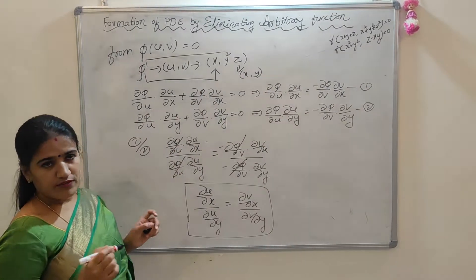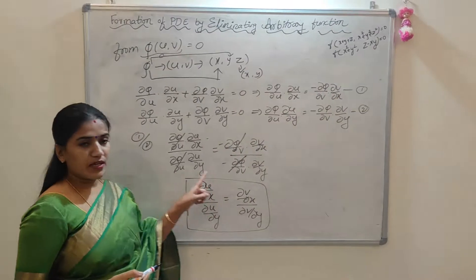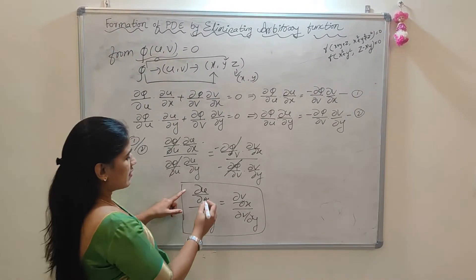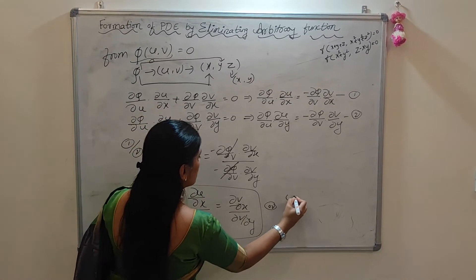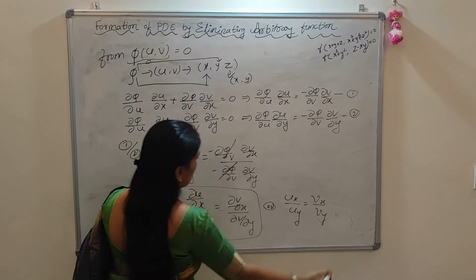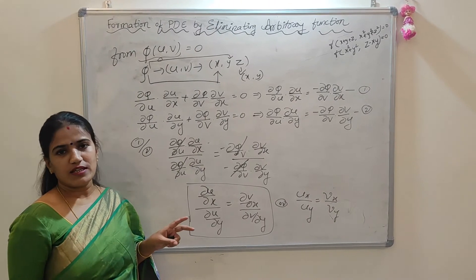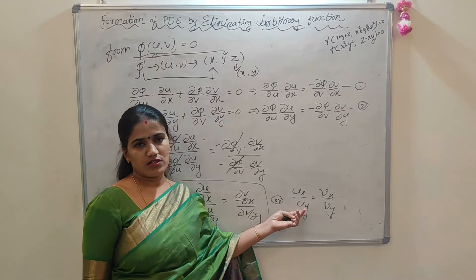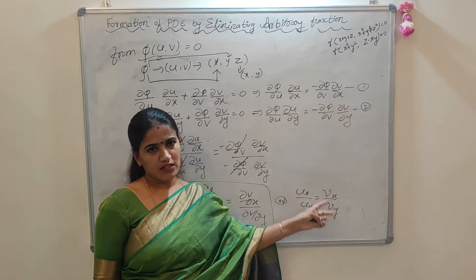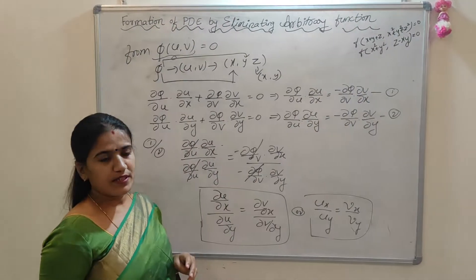So whenever the given function is of the form φ(u, v) = 0, we can use this expression to easily eliminate the arbitrary function. We can write it as u_x / u_y = v_x / v_y, where the suffixes x and y represent partial differentiation with respect to x and y respectively.